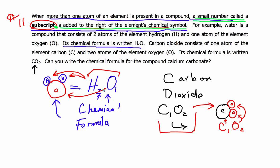A subscript is a small number added to the right of the element's chemical symbol when we're looking at a chemical formula. We have chemical symbols, which are the letters that describe elements on the periodic table, and we have chemical formulas, where we put chemical symbols together. Chemical formulas describe the molecules made when atoms of different elements come together.